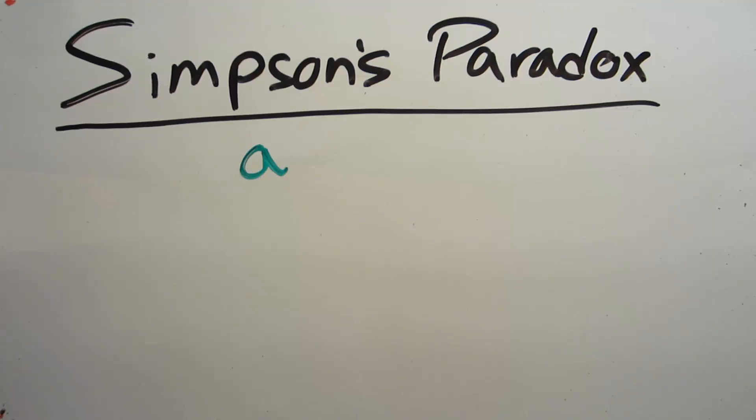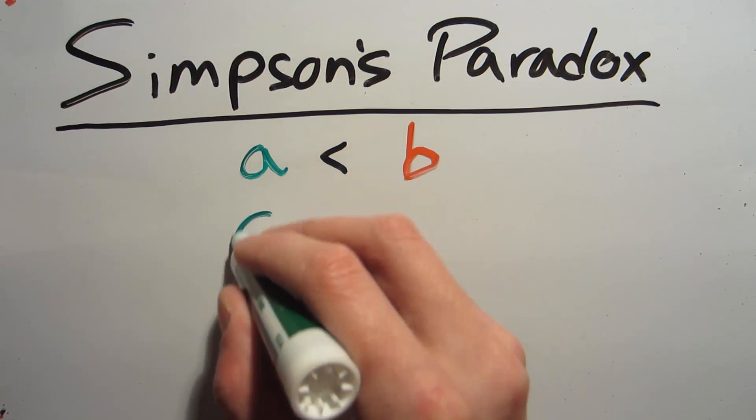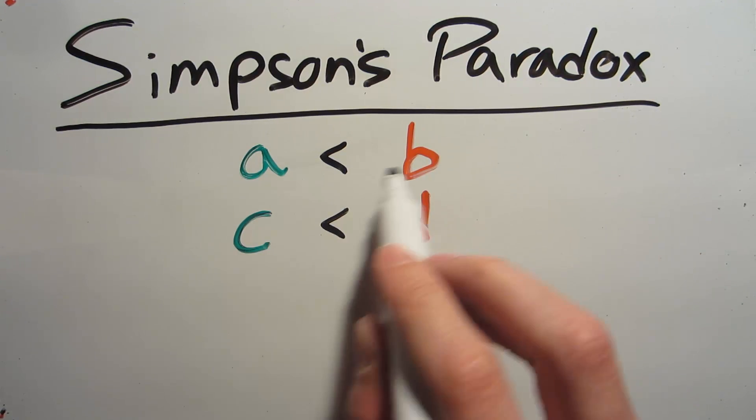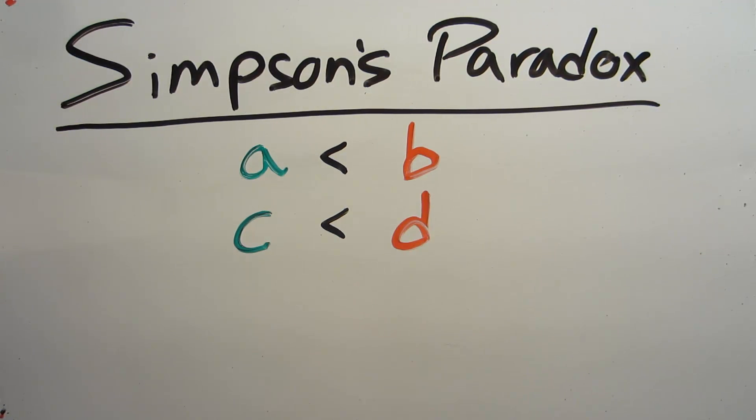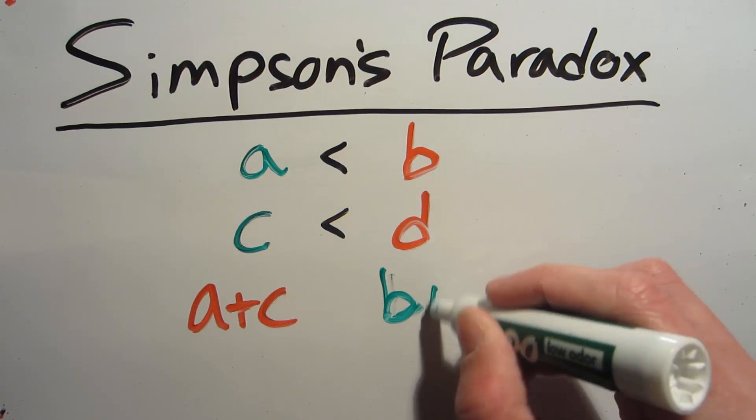Now the first natural question that arises when you hear this should be, how can this happen? How can we have relationships such that A is less than B and C is less than D, but A and C together are greater than the combination of B and D?